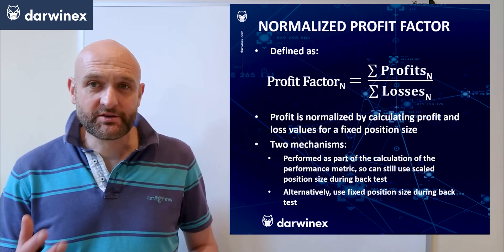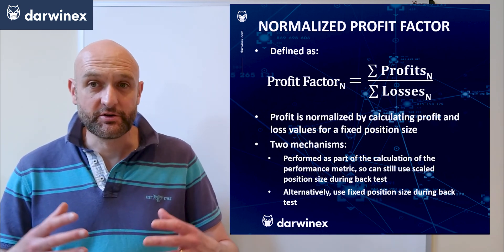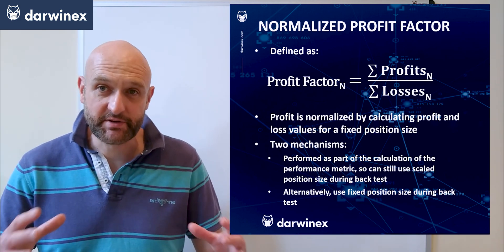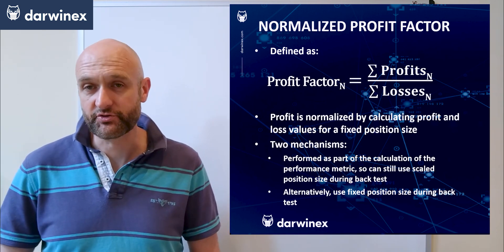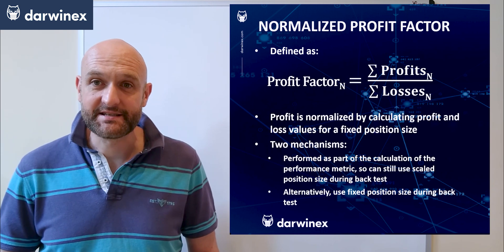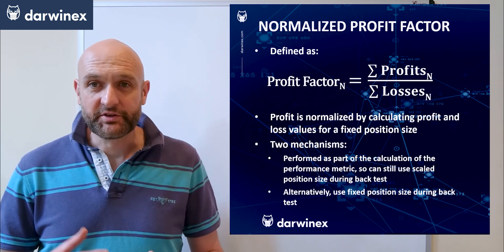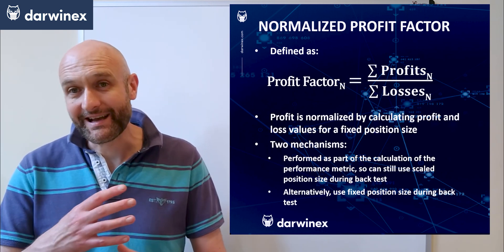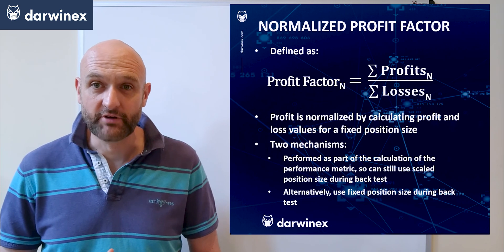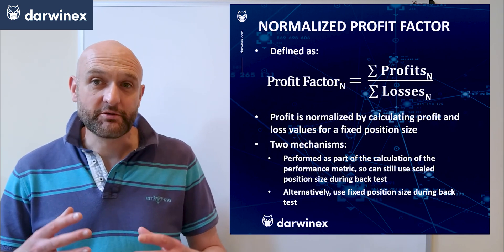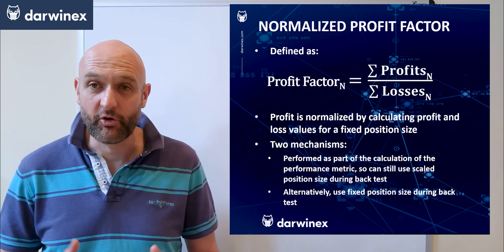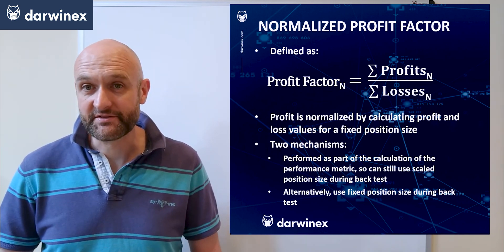The second way is to simply fix the position size of trades as part of the backtest itself, but the disadvantage there is that you don't get to see any of the exponential growth and don't get a clear indication of how your system would perform in a live setting.